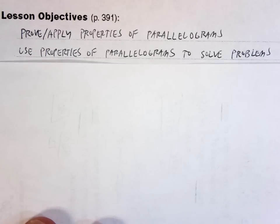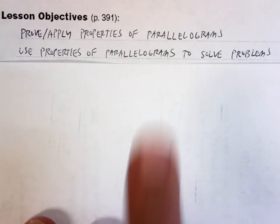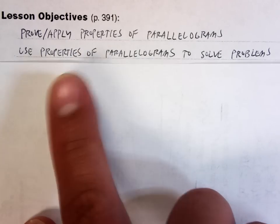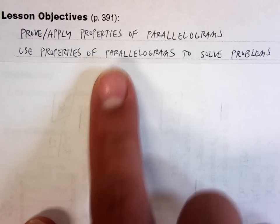First lesson talked about polygons. We'll continue to talk about polygons. We're not done talking about the stuff we did last time, but we've got to move on and teach some new stuff while continuing to make sure we remember the old stuff. Parallelograms. We're going to prove and apply properties of parallelograms and use properties of parallelograms to solve problems.